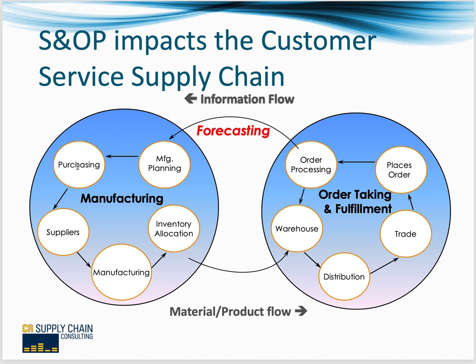In the other direction, you have actual physical goods: suppliers providing raw materials, pack, assemblies, and partially finished or finished goods to manufacturing, where you do further work or transformation into finished goods. You allocate them to your various warehouses or distribution centers, where goods stay until they're picked for distribution to the trade. We want order-taking and fulfillment to be on time and complete, which means having the right products at the right place at the right time — requiring as good a forecast as you can possibly get.